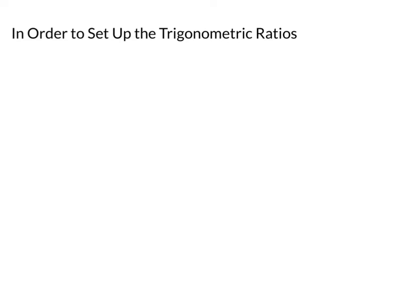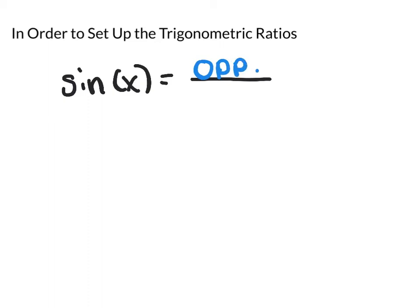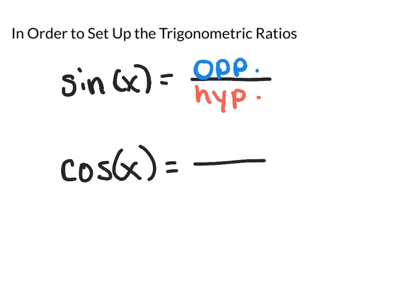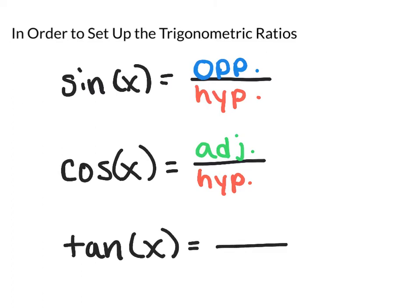For setting up trigonometric ratios, we need to know the relationships. Sine of x equals the opposite over the hypotenuse. Cosine of x is the adjacent over the hypotenuse. And tangent of x is the opposite over the adjacent. These are all fractions since they are ratios.